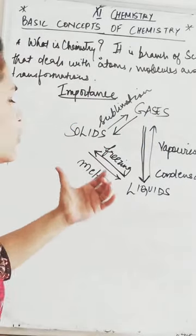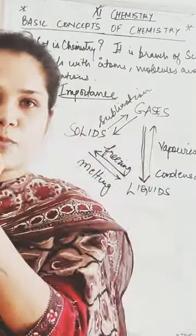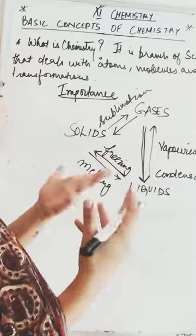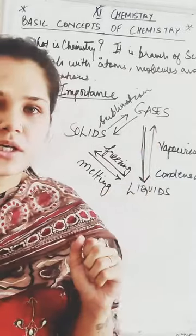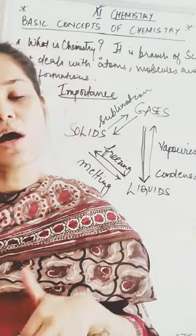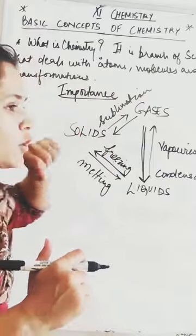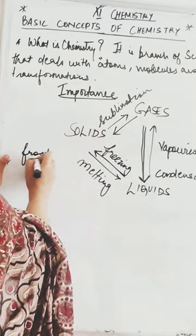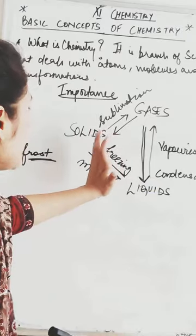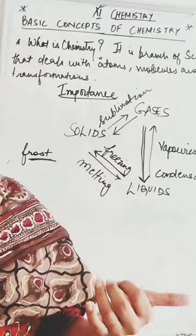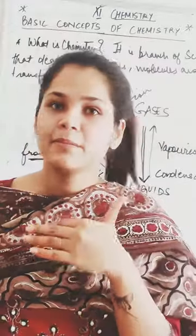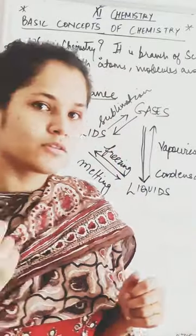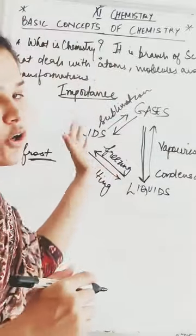Is it clear? Examples: solid to liquid — ice converting to water. Liquid to gas — converting liquid water into water vapor. Gas to liquid — for example, nitrogen gas can be converted to liquid nitrogen. Gas to solid — an example is frost, which we see in very freezing places. And solid to gas — examples are camphor or naphthalene balls, which we keep in bedding. Naphthalene balls do not convert to liquid — they go directly from solid to gaseous state. So naphthalene balls are an example of solid to gas conversion — sublimation.